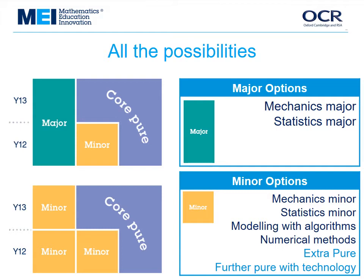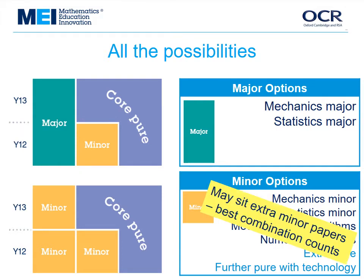There's a lot of flexibility in the MEI scheme for Further Maths. Candidates may take extra minor optional papers and the best combination counts. Some students do take more than 12 modules in the current Maths and Further Maths system, so this possibility is offered. Students can take an extra paper without risking their result — for example, if their university wants them to study some mechanics but the school doesn't usually offer it, they can learn it with support from the FMSP.